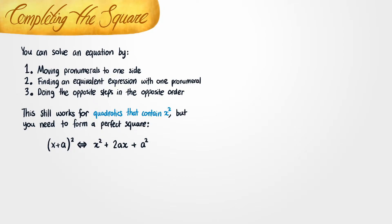Now, if you're going from the left-hand side to the right-hand side, we call that expanding. So therefore, if you're trying to go from the right-hand side back to the left-hand side, that would be factorizing.